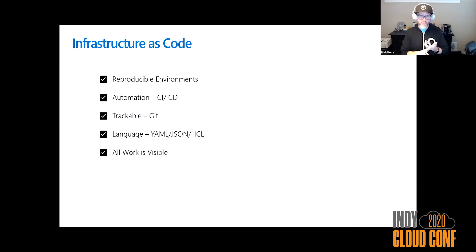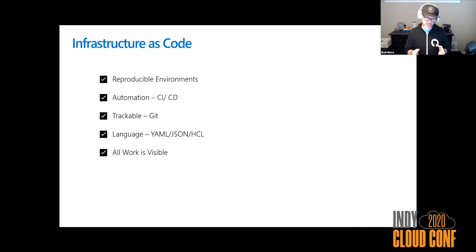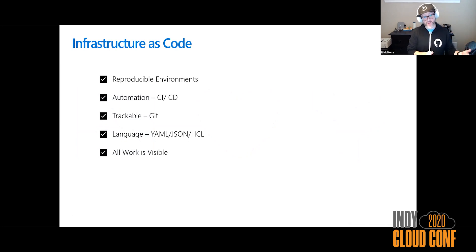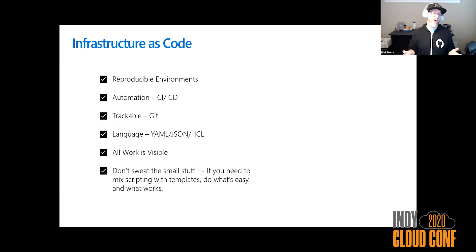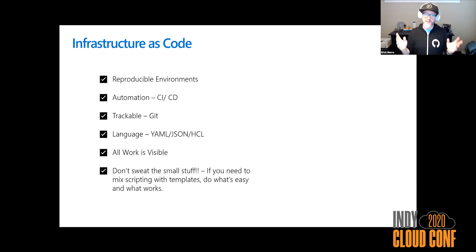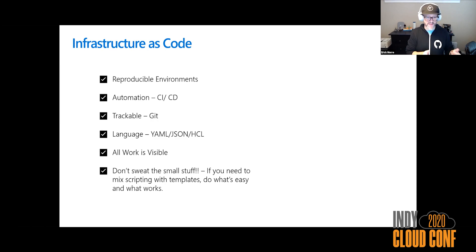Why infrastructure as code? Reproducible environments, full automation with CI/CD, everything is trackable with Git, and broad language support. There are tools like Pulumi where you can do IaC with traditional languages like JavaScript, TypeScript, and C#. All your work is visible — as an infrastructure person, a lot of times the work you were doing wasn't seen. If you adopt an Agile DevOps approach, everything you do is seen, tracked, and visible. Don't sweat the small stuff — combine scripts with templates. It's all about that CI/CD pipeline. Do what's easy, fast, repeatable, and it's going to work.